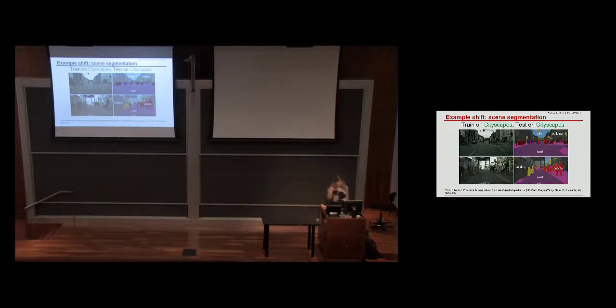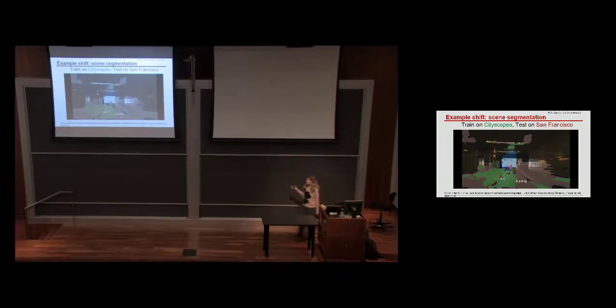The network trained on this kind of data and applied to the same kind of data does very well. But if we take the same network — trained on the Cityscapes dataset collected from European roads — and run it on San Francisco data, it fails quite badly. It's not segmenting the road at all; it thinks there are trees or buildings where the road should be. Here the car is actually going into a tunnel, which is a pretty severe visual shift.